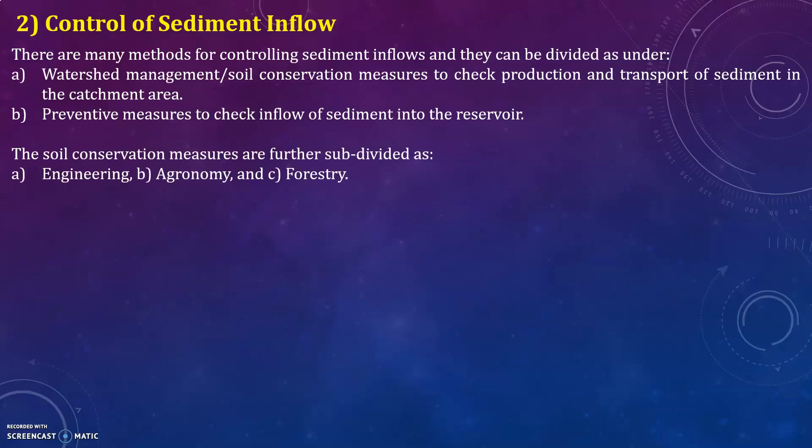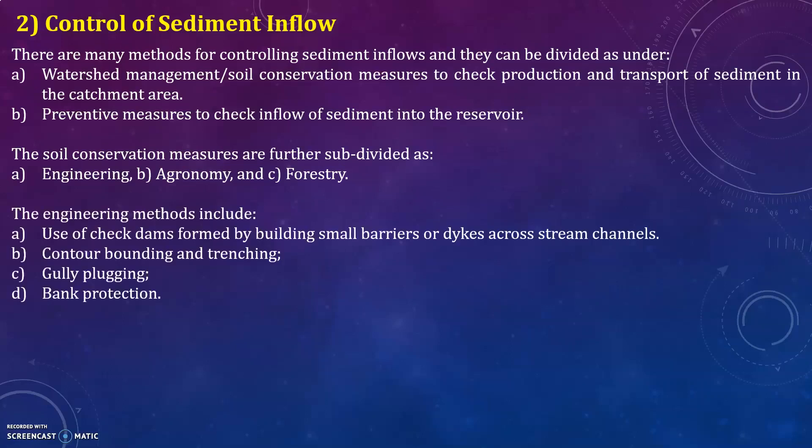Watershed management is further subdivided into three categories: engineering, agronomy, and forestry. The engineering methods include use of check dams formed by building small barriers or dikes across stream channels, contour bounding and trenching, gully plugging, and bank protection.